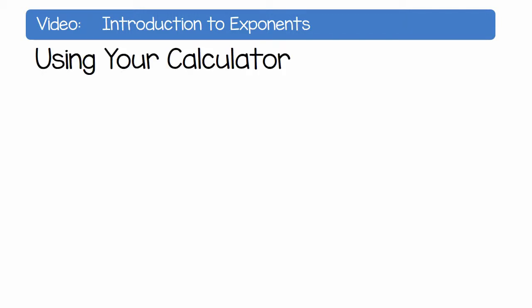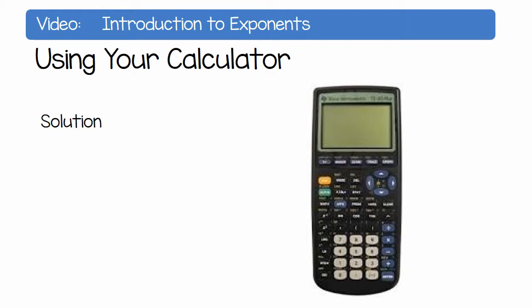Now, on your calculator, what you will do is type 4 to the exponent 3. You will find the exponent button where it is shown here in the diagram. Press enter.